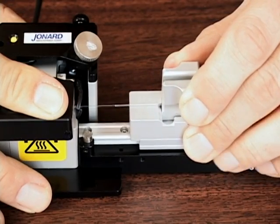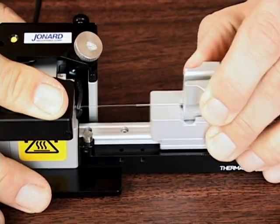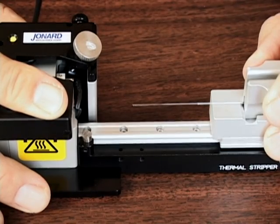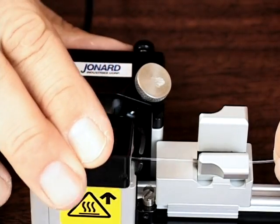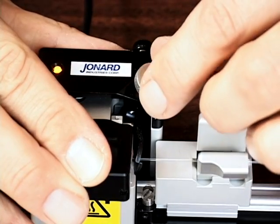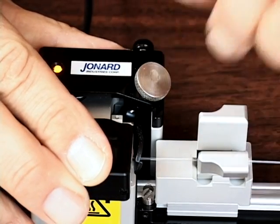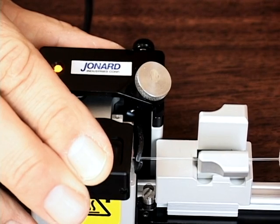If the fiber is stripped, proceed to the next step. If not, repeat the previous step. Next, place the stripped portion of the fiber in the stripping blade and turn the blade adjustment screw counterclockwise until the blade grabs the fiber cladding.